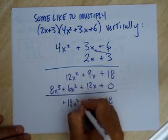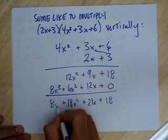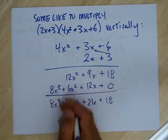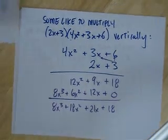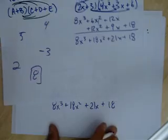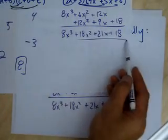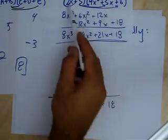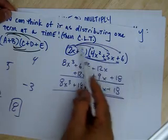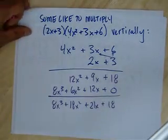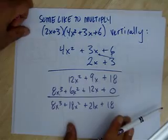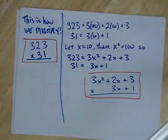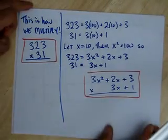18x squared, 8x cubed — look how nice that looks. It's the same answer we got before: 8x cubed, 18x squared, 21x, plus 18. You can distribute horizontally or do it vertically. Notice this is exactly the way that we do standard multiplication.